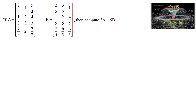Matrix A is equal to [2/3, 1, 5/3; 1/3, 2/3, 4/3; 7/3, 2, 2/3], which is a 3 by 3 matrix. Another matrix B is equal to [2/5, 3/5, 1/5; 2/5, 4/5, 7/5; 6/5, 2/5], which is also a 3 by 3 matrix.